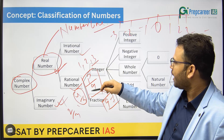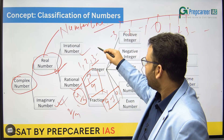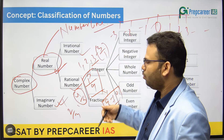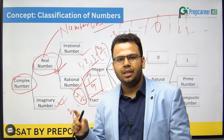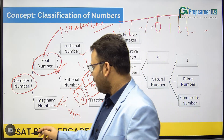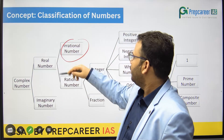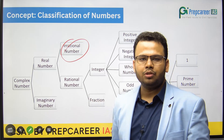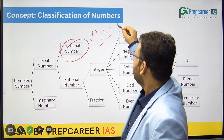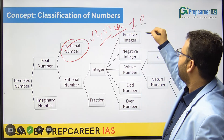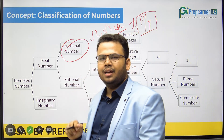The reason integers are rational is that they can also be presented in the form of P/Q — for example, you can write 3 as 3/1, both are the same thing. So rational numbers are those which can be presented in the form of P/Q where Q is not equal to 0. Irrational numbers are those which are not rational — for example, root 2 and root 3 cannot be presented in the form of P/Q, which is why they are irrational.